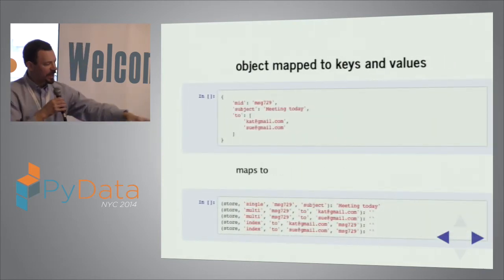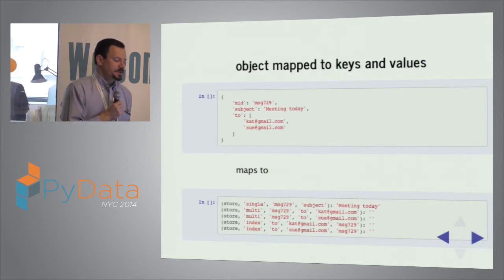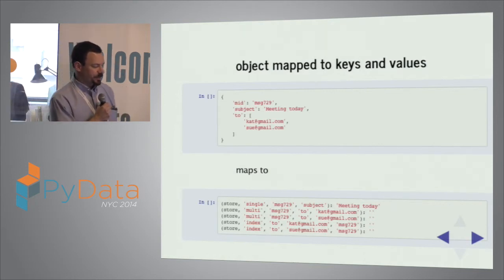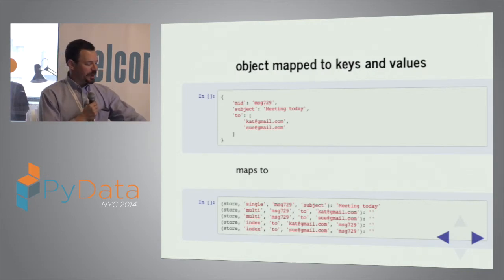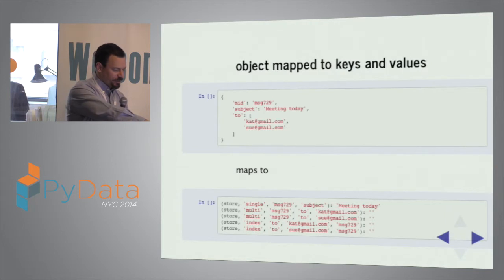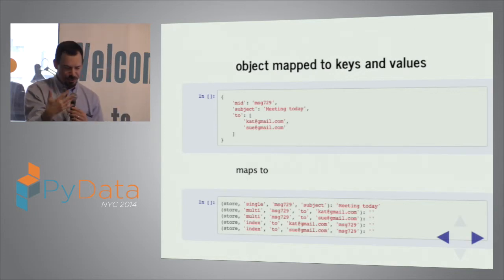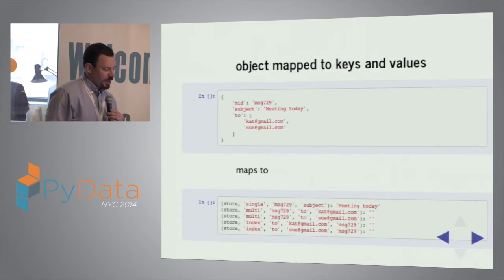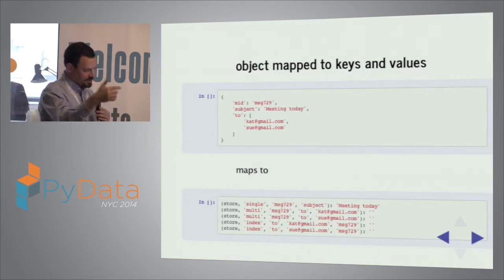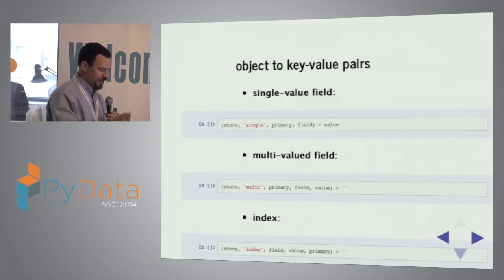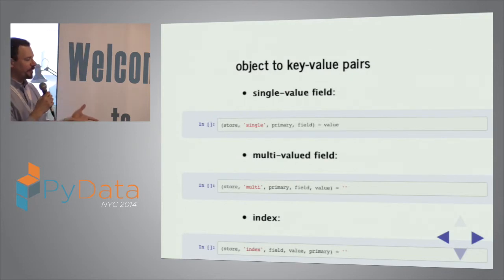Here's an example of the key structure. For single-valued fields: the tuple is (store, 'single', primary_key, field_name) mapped to the value. For multi-valued fields: we tag it 'multi' and pull the value into the key tuple, enabling multiple entries per field. For indexed fields: the field value comes to the left in the tuple — we invert the order compared to the regular field structure, because that lexicographic order is what enables efficient range reads on the index.